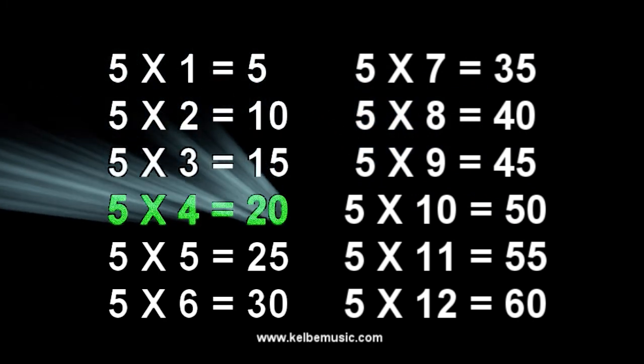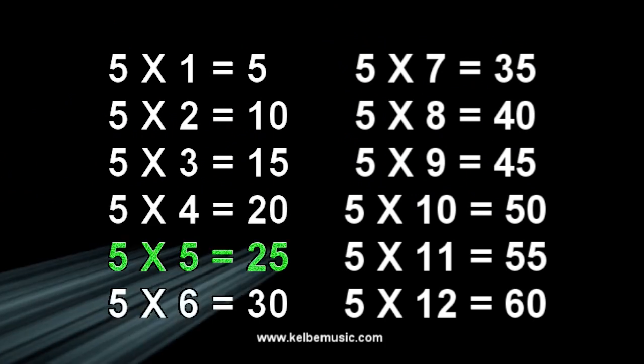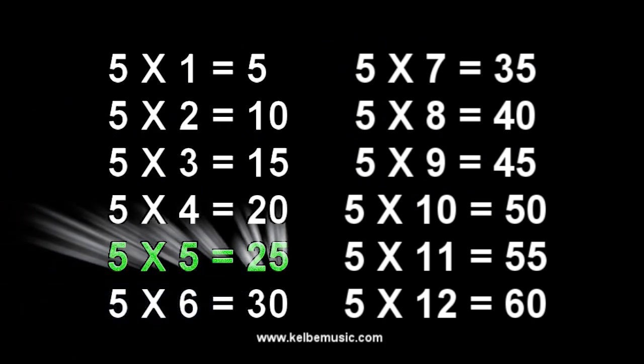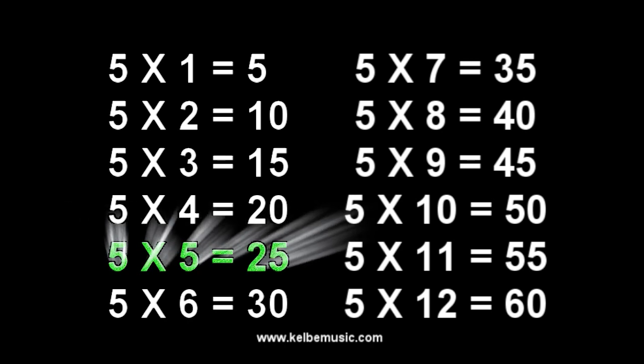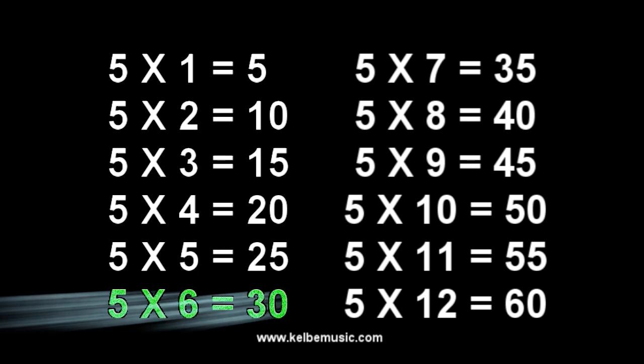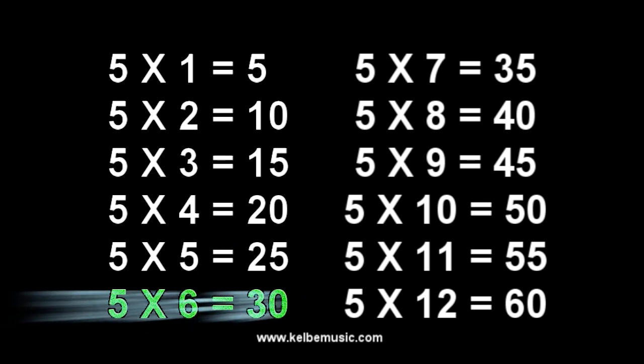5 times 4 is 20, 20. 5 times 5 is 25, 25. 5 times 6 is 30, 30.